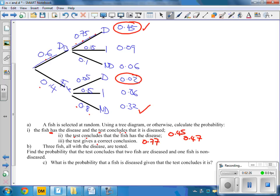Three fish, all with the disease are tested. Find the probability that the test concludes that two fish are diseased and one is non-diseased. Ah, now this is a bit different in that we already know that they've got the disease. So we already know we're up in this box here. And what do we want? We want two to be diseased.